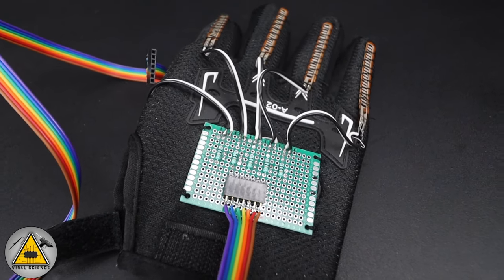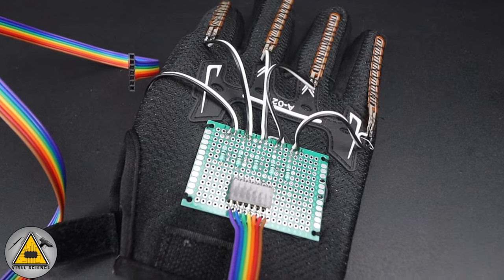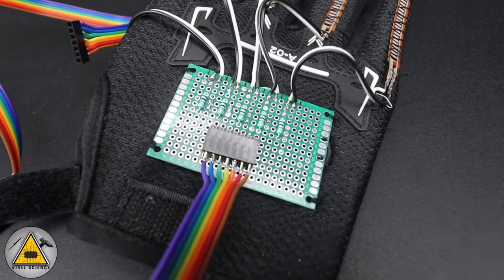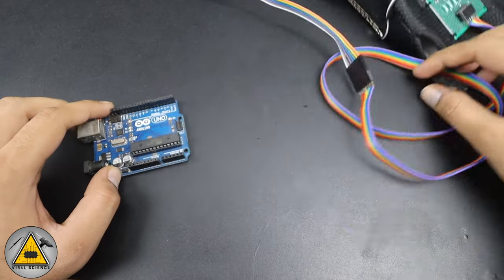So as per the circuit diagram, I have soldered these resistors on a PCB and stitched it on the gloves. And to extend this connection to Arduino, I'm using this ribbon cable. So now we'll continue the remaining connections with the Arduino.